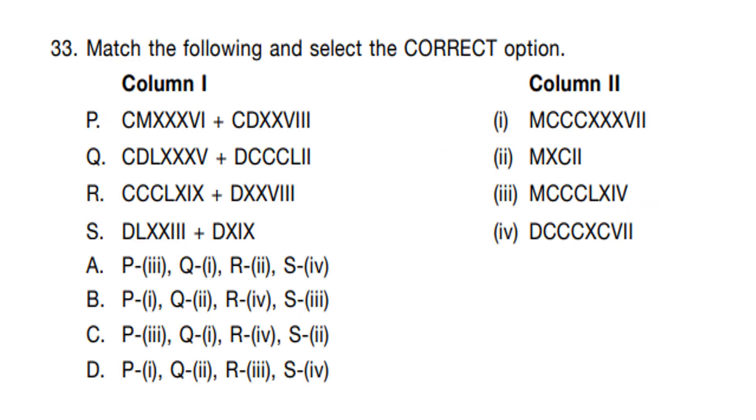Question number 33. Match the following and select the correct option. These are Roman numerals. And first, we write down the numbers. C is 100, M is 1000, D is 500, L is 50, X is 10, V is 5, and I is 1. The value of these numbers is, this is 936 plus 428. Answer is 1364. And in column 2, this is 1337. So first we write down all of the numbers.